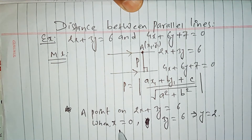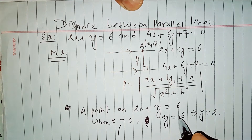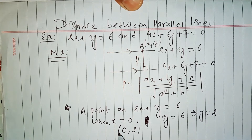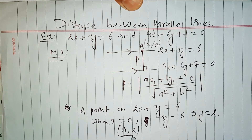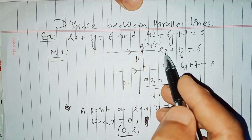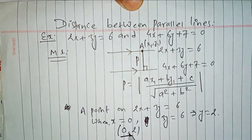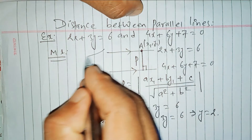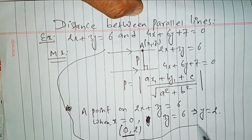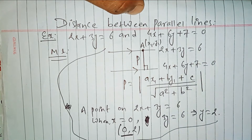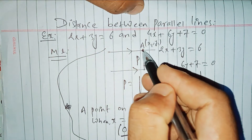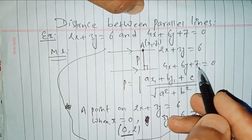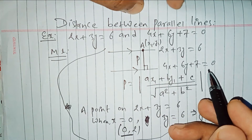So we have the point (0, 2) on the first straight line. Now apply this point to the second line 4x plus 6y plus 7 equals 0 to find the perpendicular distance d.